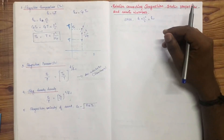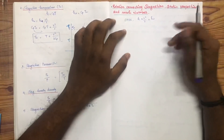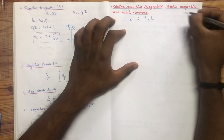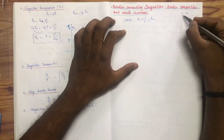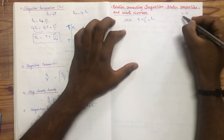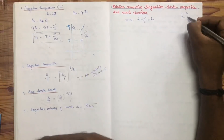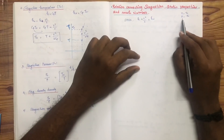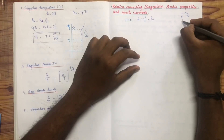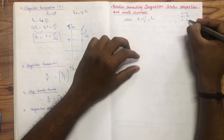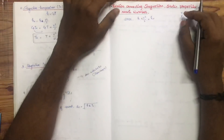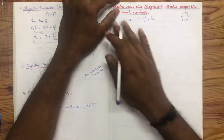We will derive the relationships between stagnation and static temperature, stagnation and static density, and stagnation and stagnation density. These relationships will be connected to the core equations and derived systematically.